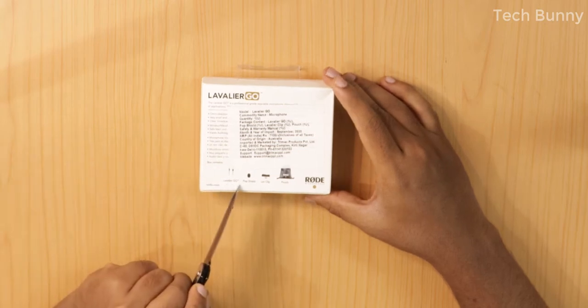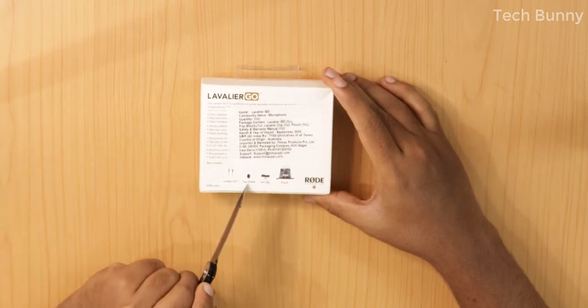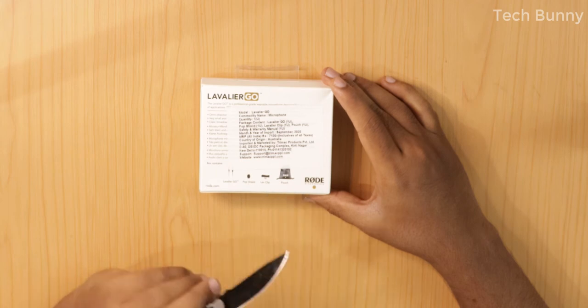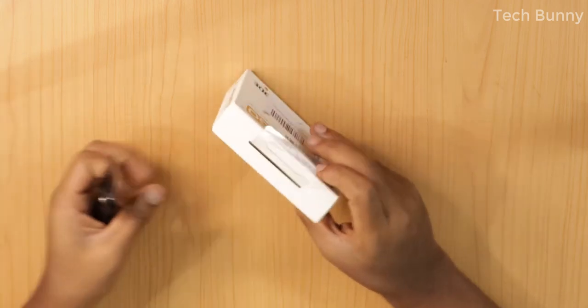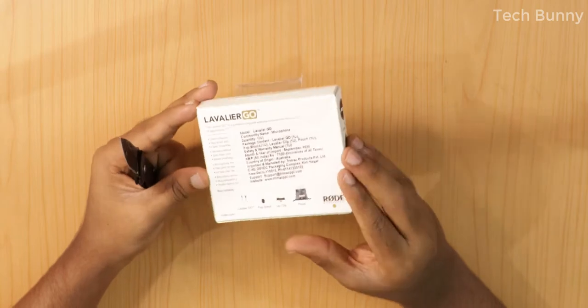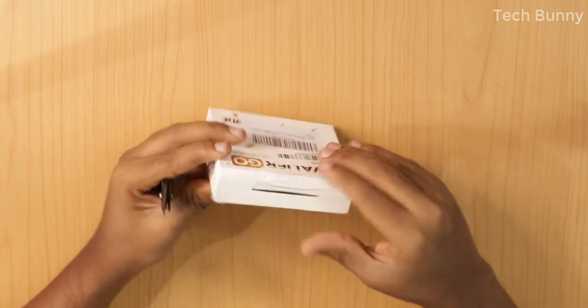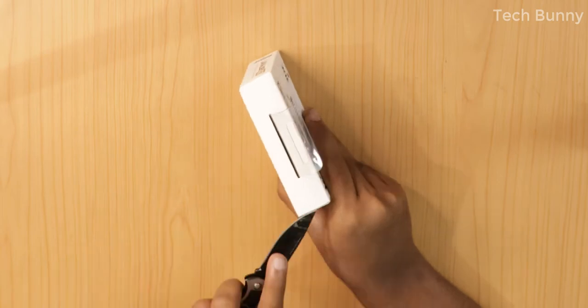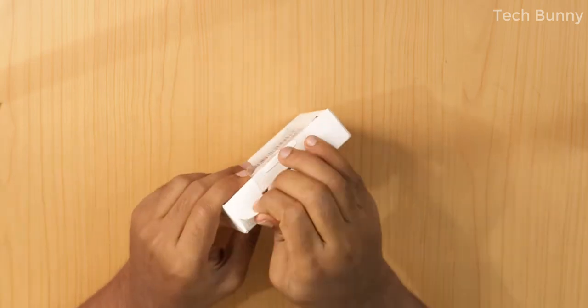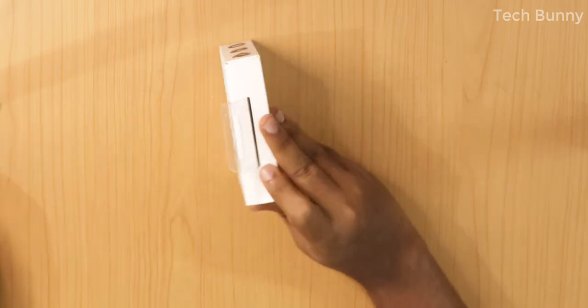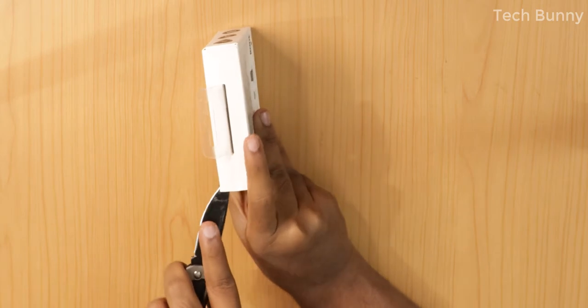In the box they mentioned: Lavalier Go microphone, pop shield, lav clip, and pouch. Let's break the seal. Yeah, the seal is there. I'll cut this side to open it.